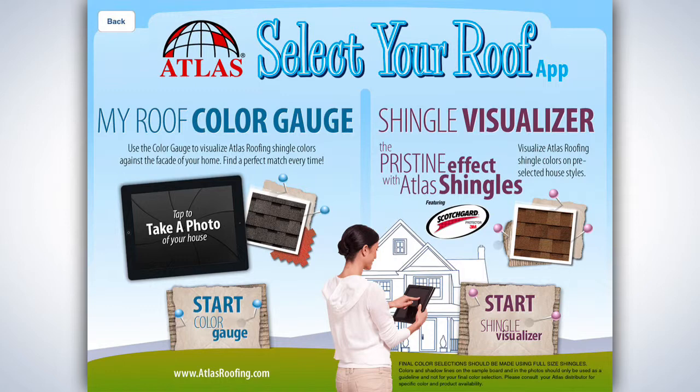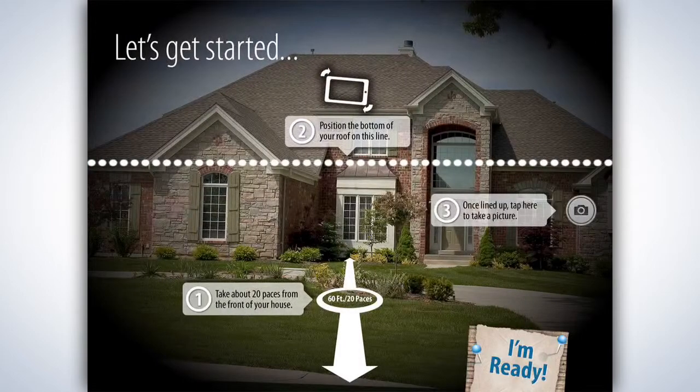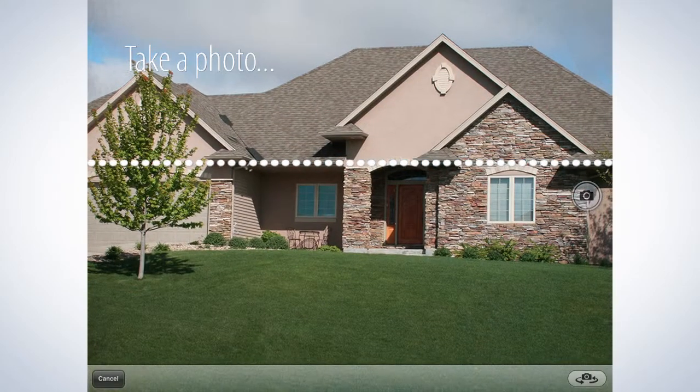To use the My Roof Color Gauge, first time users should tap the iPad Take a Photo image on the left. You'll be taken to a guide which explains how to orient the iPad to capture the shot of the home's facade. It even tells you approximately where to stand. Tap I'm Ready to open the camera and you can snap your photo.